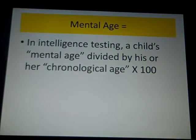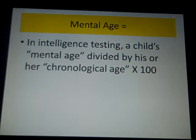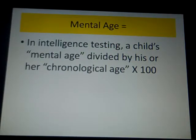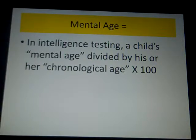IQ is computed by taking mental age divided by chronological age and multiplying by 100. For example, if my mental age is 40 and my chronological age is 40, my mental capacities are commensurate with my age — so 40 divided by 40 is 1, times 100 is 100. I would be perfectly average IQ.